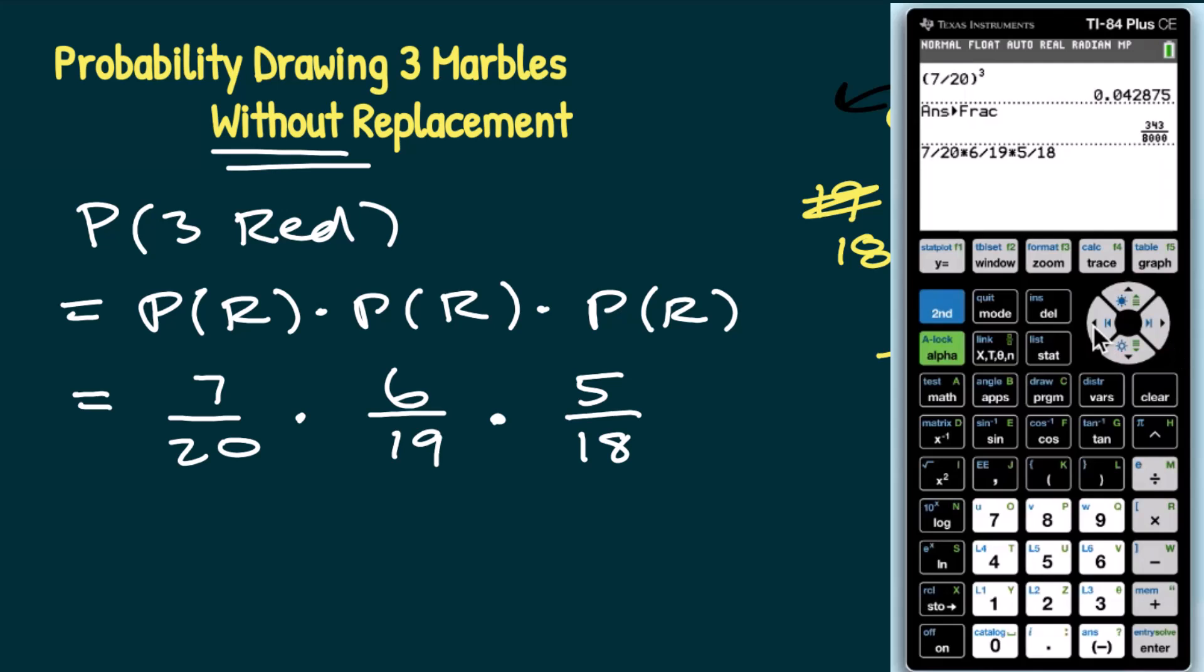I'm going to convert this as a fraction right from here. So I'm going to go to my math menu and then enter to choose convert to fraction. And it gives me that reduced fraction of seven over 228. That's my probability as a fraction.